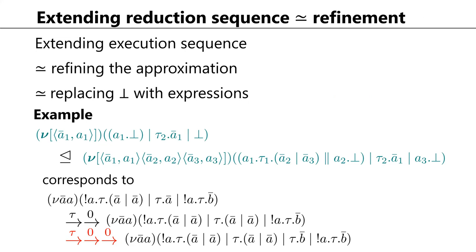Extension of a reduction sequence can also be represented using linear approximations. Extending a linear approximation corresponds to refining it, which roughly means replacing undefined with more concrete expressions. For example, one linear approximation is a refinement of another if the undefined parts are replaced with something more concrete. We use an order relation symbol to express that a process is a refinement of another. Refining linear approximations corresponds to adding more steps to the reduction sequence.